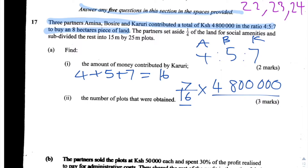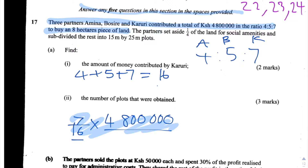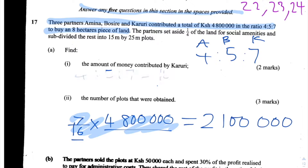Since it's a calculator paper, we can compute this directly. 7 divided by 16 is 0.4375, and multiplying by 4,800,000 gives 2,100,000 shillings as the amount contributed by Karuri.